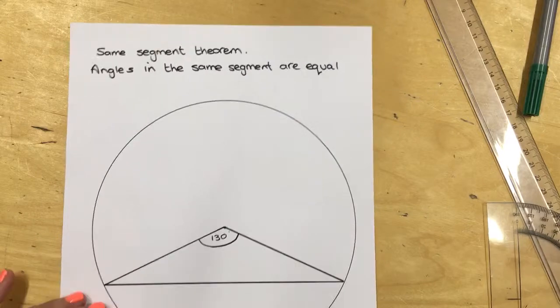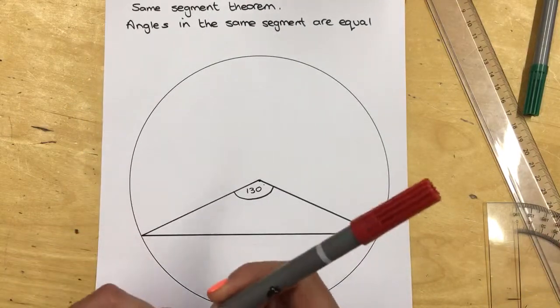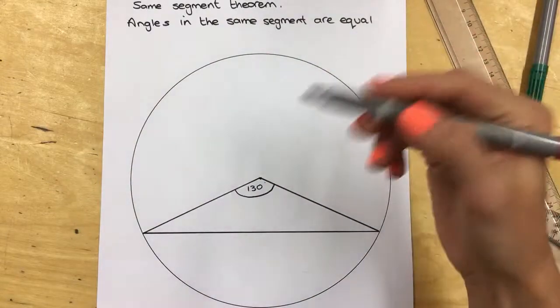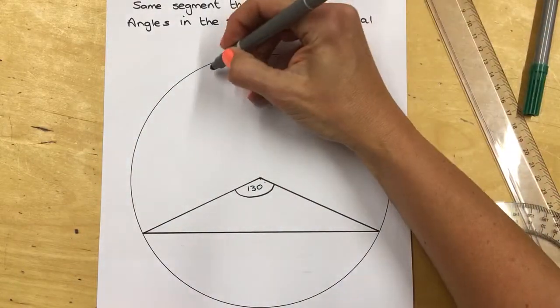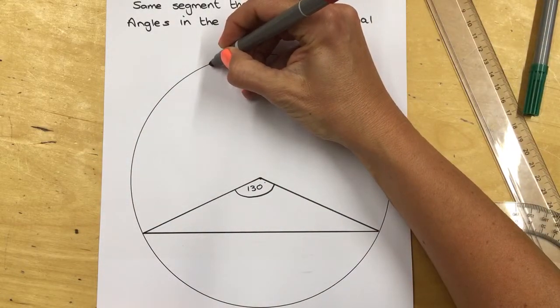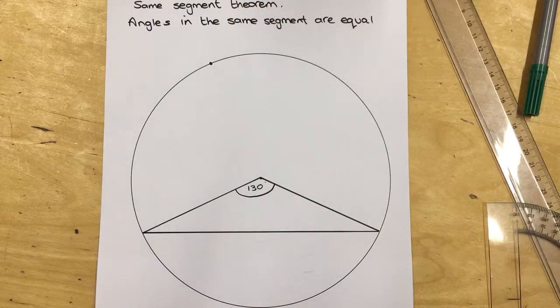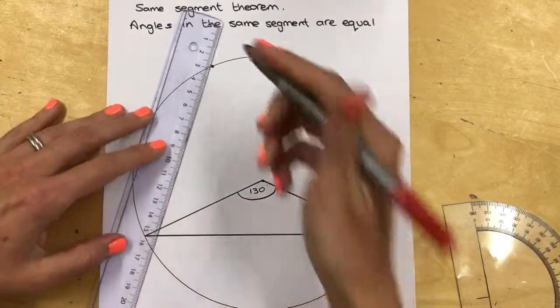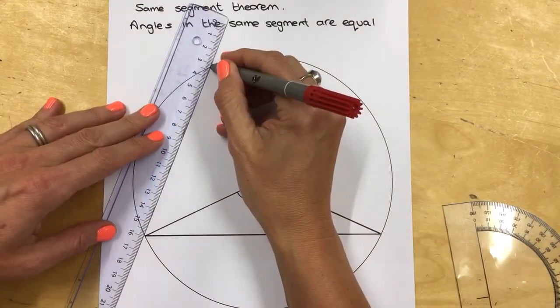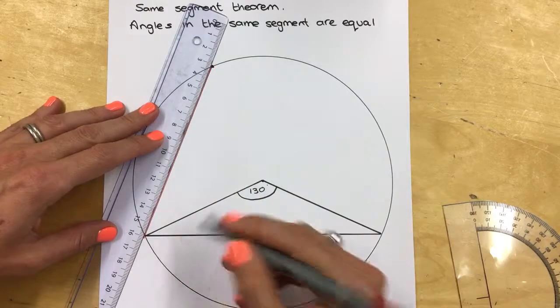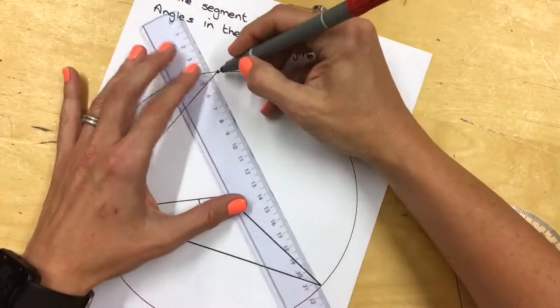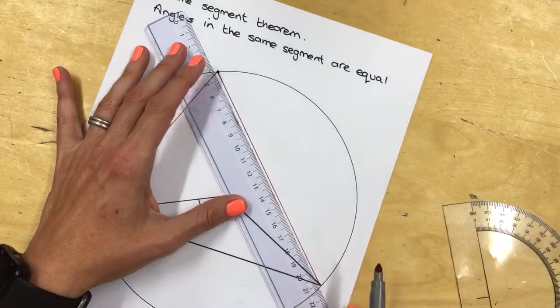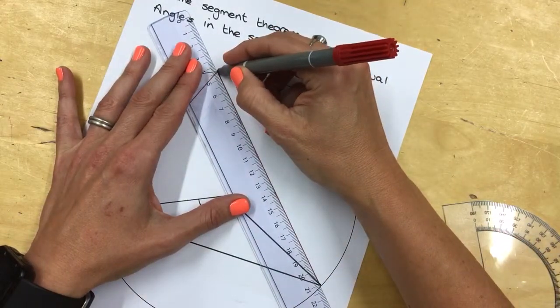Now what I'm going to do is I'm going to choose a point on the circumference somewhere up here. So if I chose, say for instance, this point here. And what I'm going to do is I'm going to join from my circumference to one end of my cord and to the other end of the cord.